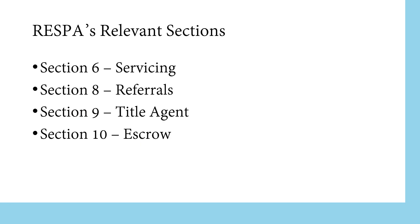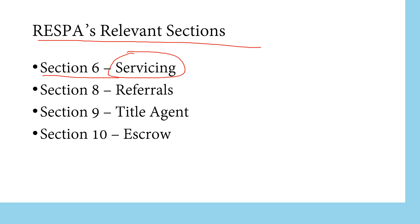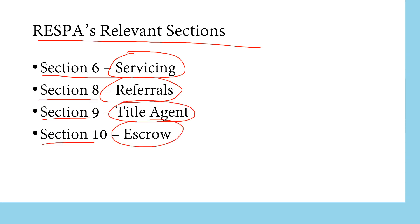There are 4 relevant sections when it comes to RESPA. Section 6, which is the servicing section. Section 8, which is for referrals. Section 9, which is the title agent section. Section 10, which is the escrow section.